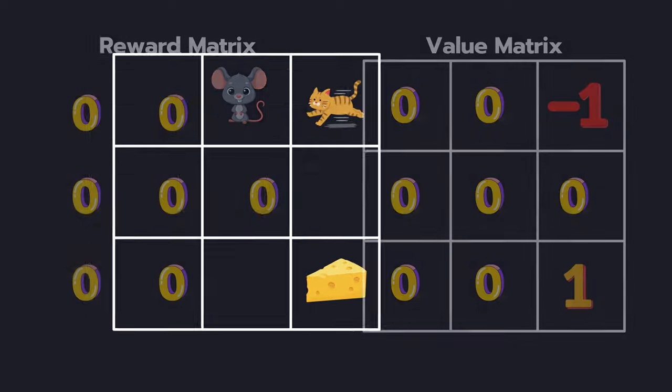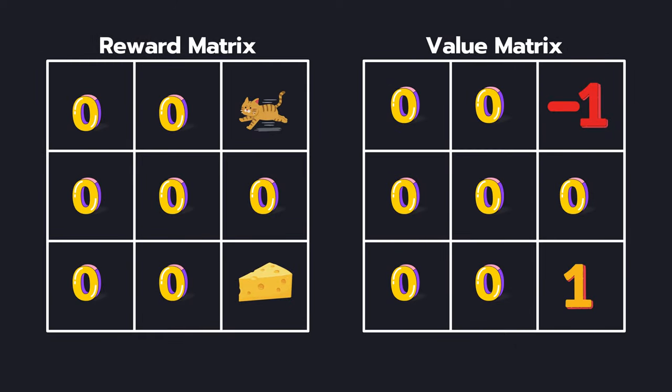Now, let's take a look at our reward matrix and the value matrix. As we already have established, the reward is minus 1 if you reach the state with Tom and the reward of plus 1 if you reach the state with cheese. And we'll initialize the value matrix with 0 everywhere else except our terminal states where we know that the reward is minus 1 and plus 1.